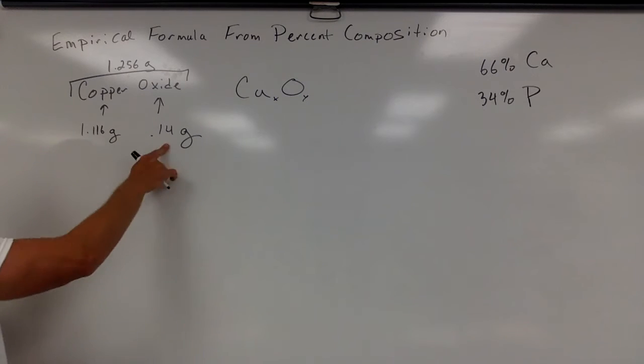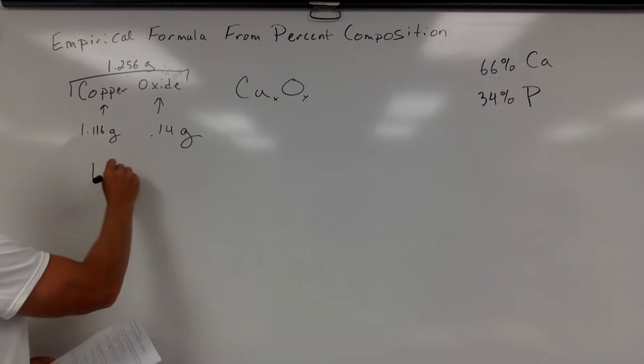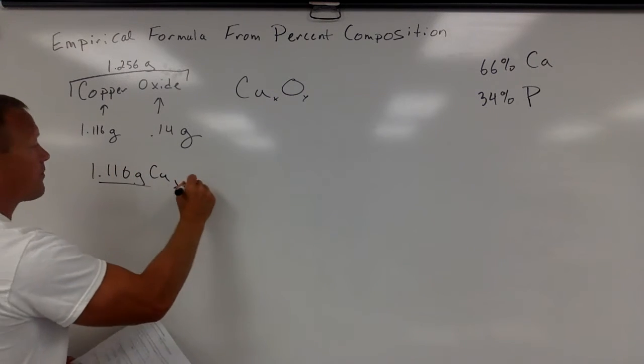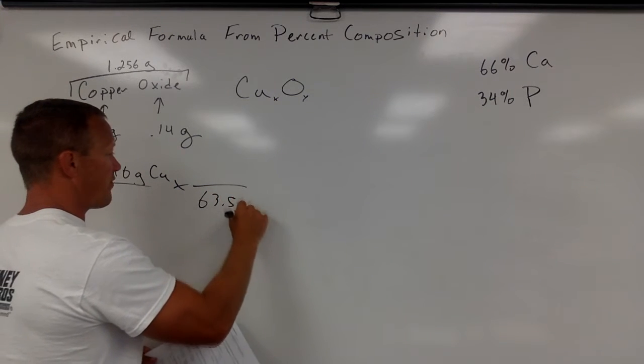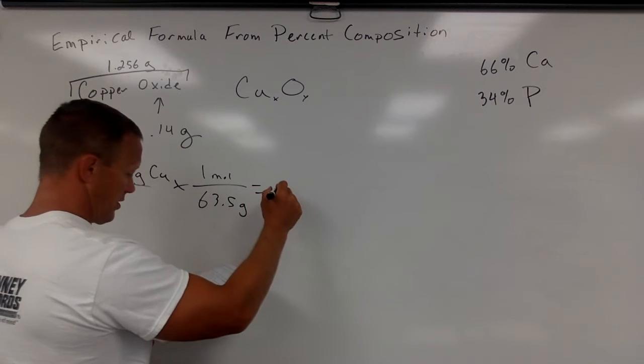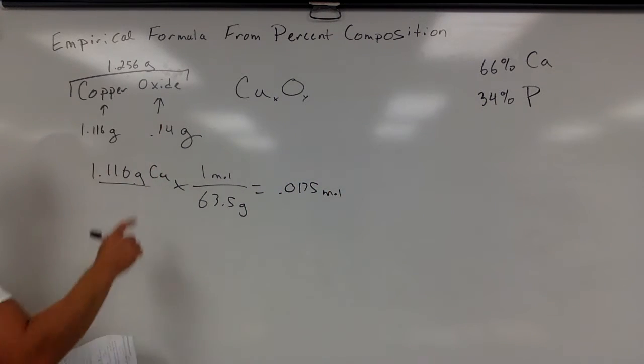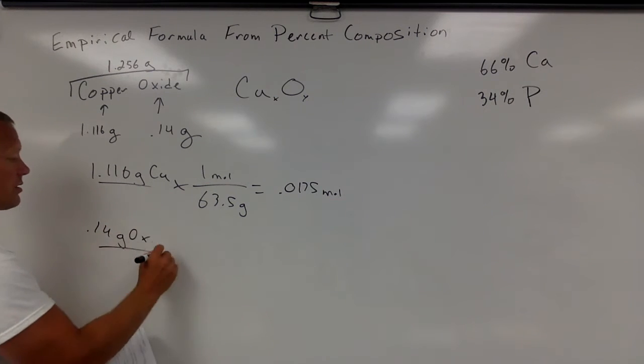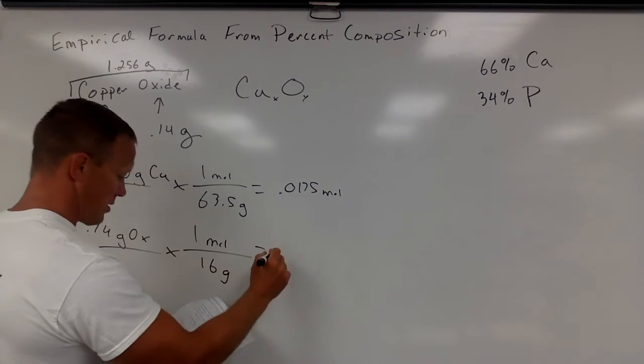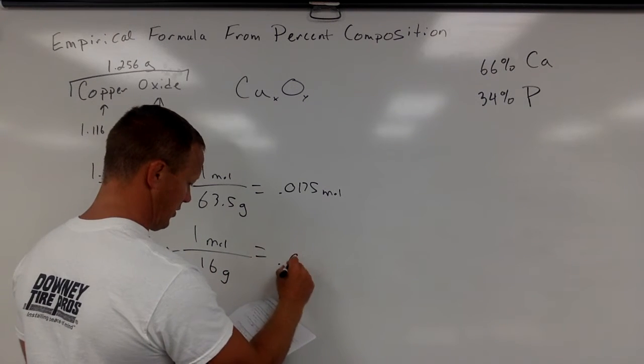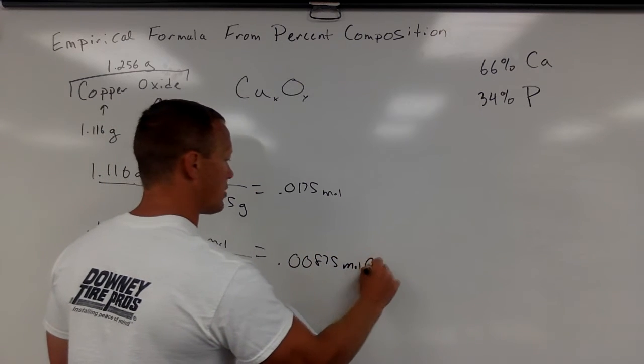So we need to change these into moles. We can't just get the ratio in grams, we need to change into moles. So we have 1.116 grams of copper. These are ones I would not round on, so 63.5 grams of copper is a mole. You get 0.0175 moles. The 0.14 grams of oxygen, 16 grams of a mole of oxygen, that is 0.00875 moles of oxygen.